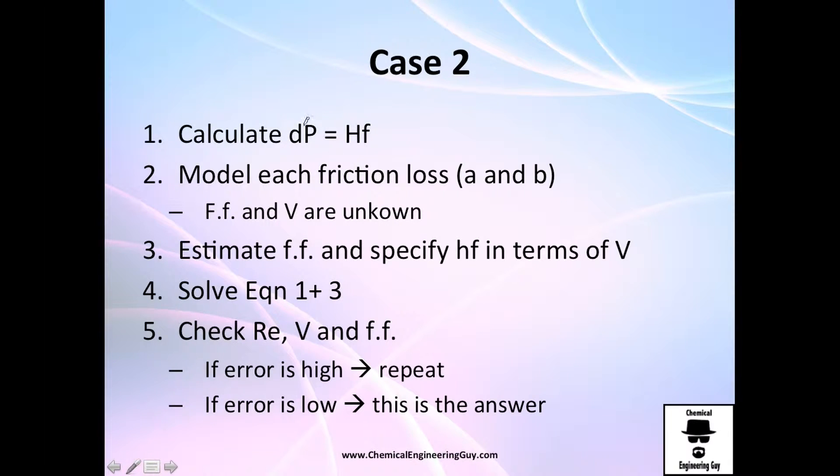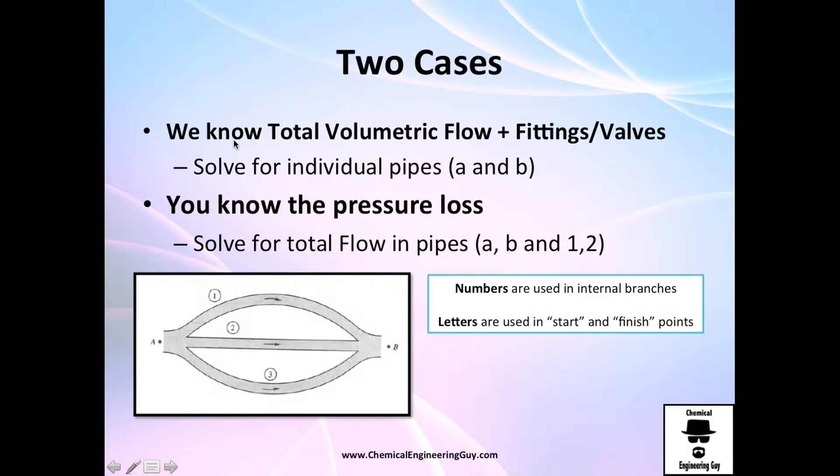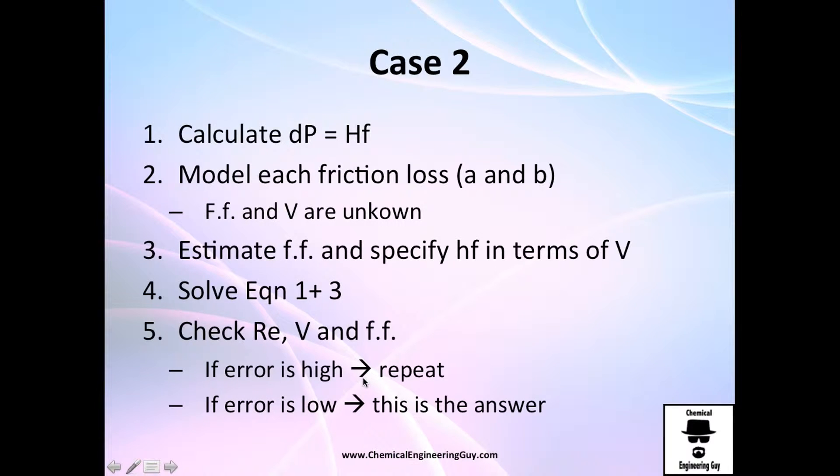Case number two is a little bit different. You know, let's say you don't know this, but you know the drop in pressure. So, the drop in pressure, you probably know, if you've been following the course altogether, that the change in pressure, or delta P, and rho, can be related to friction. So, we're going to establish that equation. Then, we're going to model each friction loss. You know that friction factor and velocity are not known.